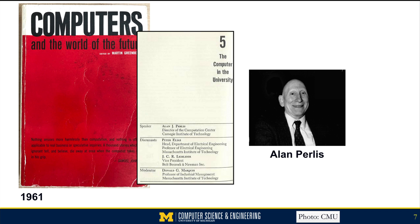Perlis spoke on why computer science should be a requirement for all students on all campuses. He thought that it should be a requirement, part of a general education requirement, for everyone to learn how to program. This was his chapter: The Computer in the University.